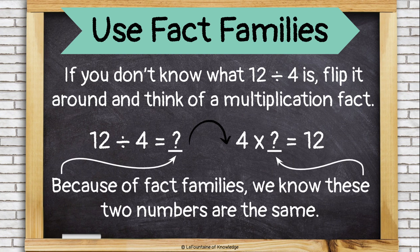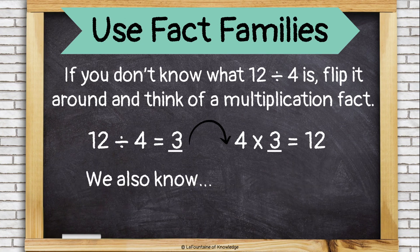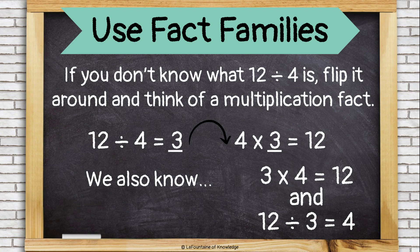Because of fact families, we know that these two missing numbers are gonna be the same. Three. We also know that three times four equals twelve and twelve divided by three equals four.